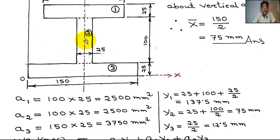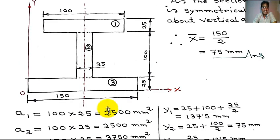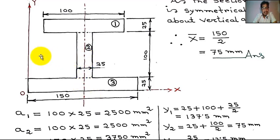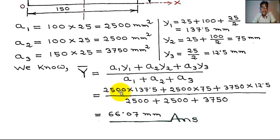So the centroid of the I-section is located at x̄ = 75 mm and ȳ = 66.07 mm from the origin. This position is the center of gravity of the whole section. Thank you, students.